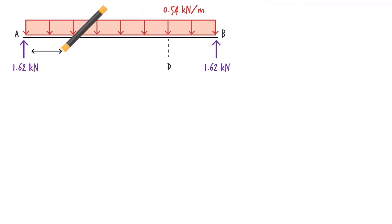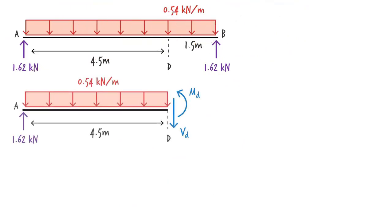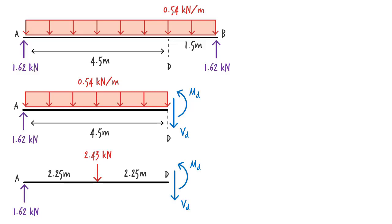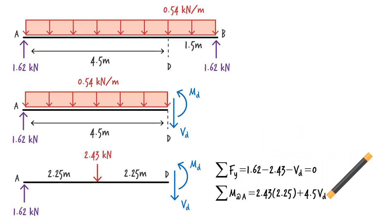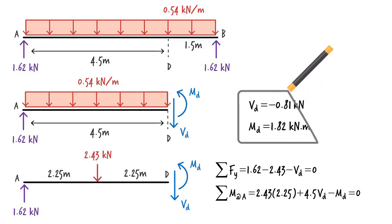We can determine the shear and moment at D in a similar manner. Here is the free body diagram of the left segment of the beam after cutting the beam at point D. Here is the free body diagram after replacing the distributed load with its equivalent concentrated load, and here are the equilibrium equations. Solving them for the unknowns, we get negative 0.81 kN for the shear force and positive 1.82 kNm for the bending moment at D.